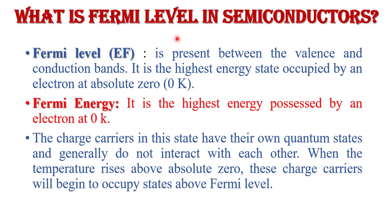Now, what is the Fermi level in a semiconductor? The Fermi level is present between the valence band and the conduction band. It is the highest energy state occupied by an electron at absolute zero Kelvin. Fermi energy is the highest energy possessed by an electron at zero degrees Kelvin.